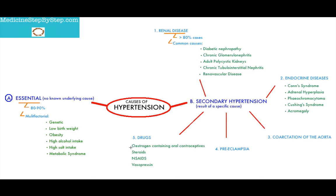In summary, the causes of hypertension: there is essential hypertension, which has a multifactorial etiology. And then there is secondary hypertension, which can be caused by renal disease, endocrine diseases, coarctation of the aorta, preeclampsia, and drugs.